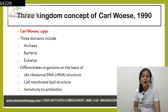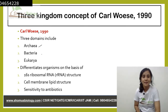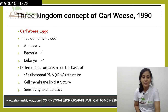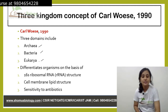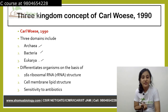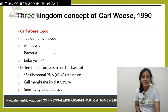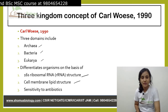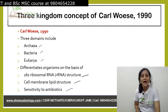The three domains of Carl Woese's classification include Archaea, Bacteria, and Eukarya. The classification system divides life based on differences in the 16S ribosomal RNA or rRNA structure, cell membrane lipid structure, and their sensitivity to antibiotics.